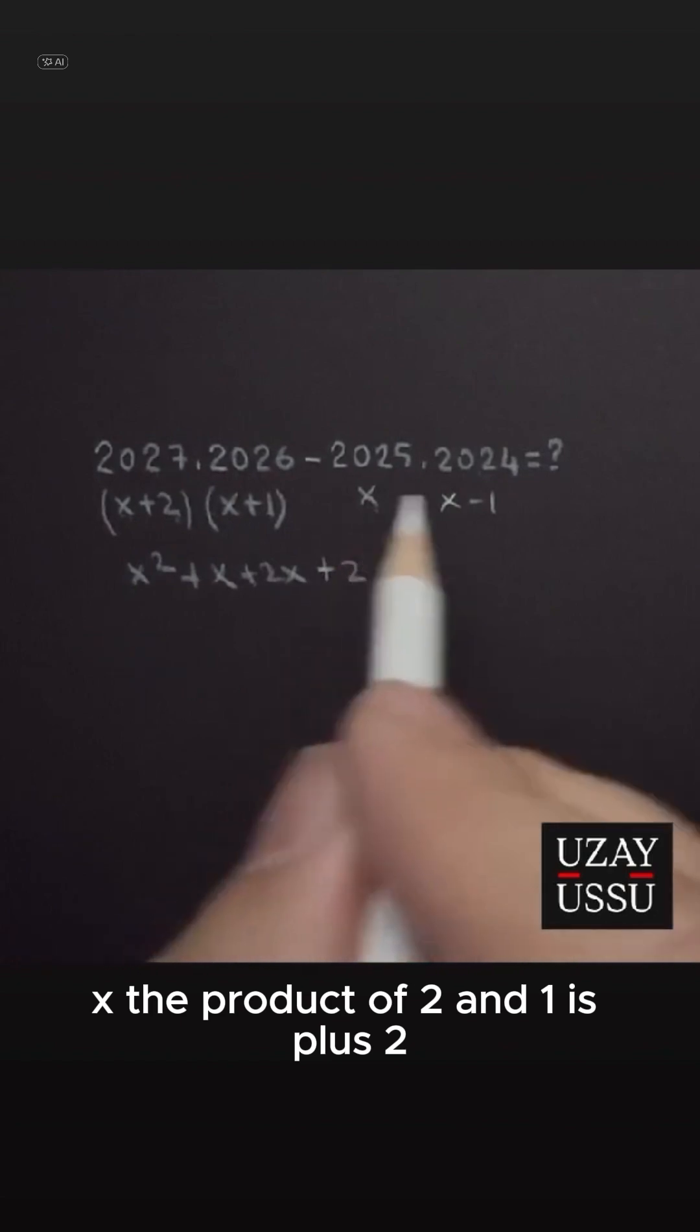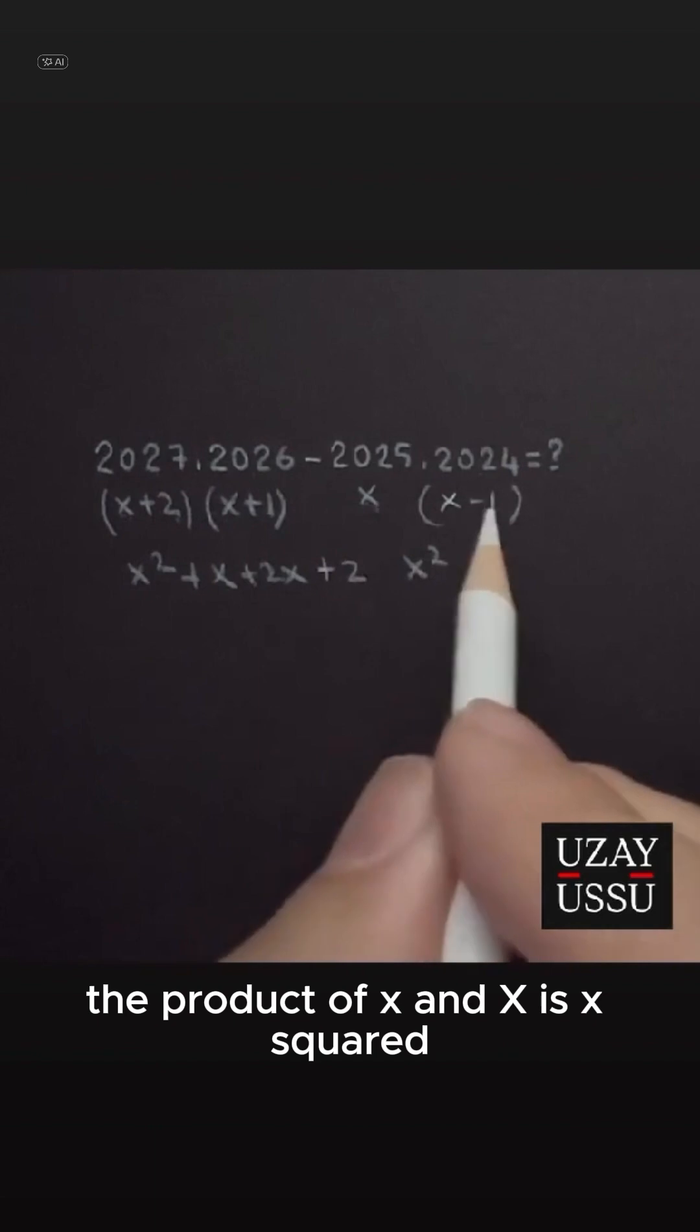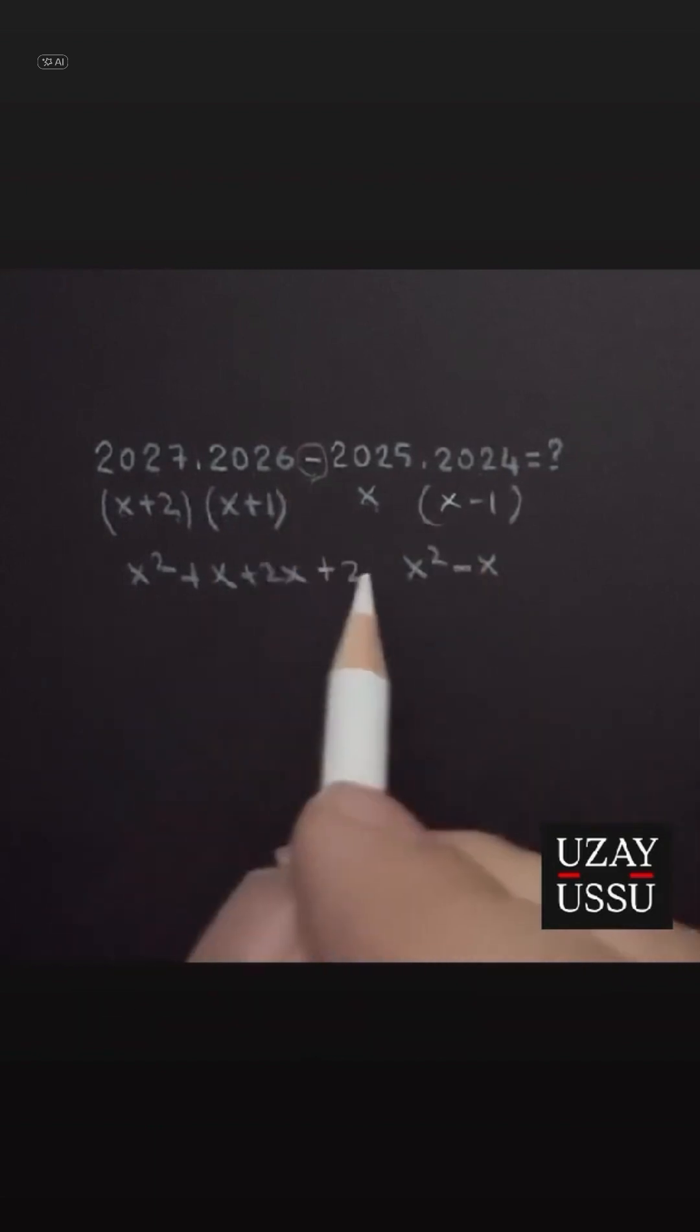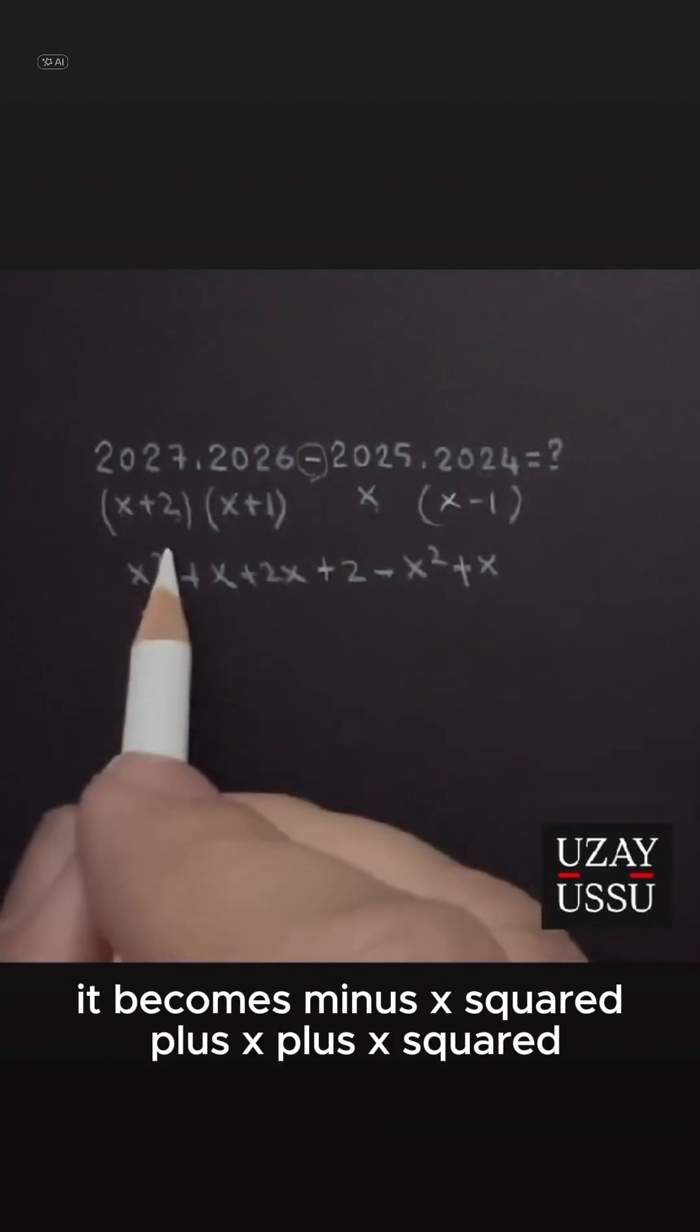Let's multiply x by x minus 1. The product of x and x is x squared. The product of x and minus 1 is minus x. There was a minus sign in between, so we distribute this minus to both. It becomes minus x squared plus x.